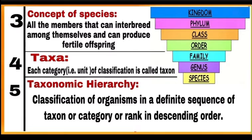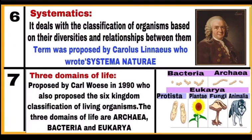Taxonomic hierarchy: classification of organisms in a definite sequence of taxon or category or rank in descending order. In taxonomic hierarchy we start classifying organisms starting from kingdom, then phylum, followed by class, order, family, genus, and finally species. Systematics: it deals with the classification of organisms based on their diversities and also the relationship between them. The word systematics is derived from the Latin word 'systema' which means systematic arrangement of organisms, and this term was proposed by Carolus Linnaeus who wrote a book 'Systema Naturae'.